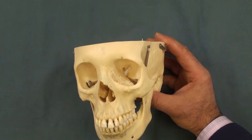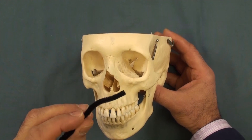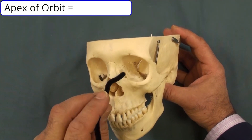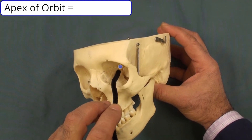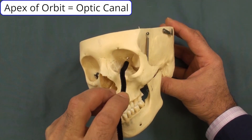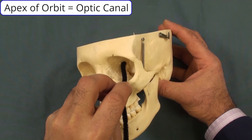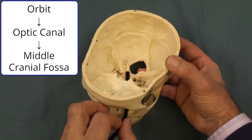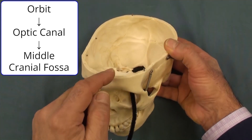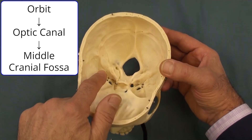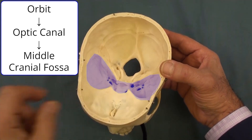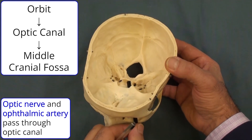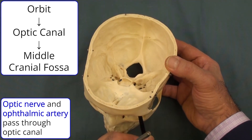Let's begin with the bony landmarks inside the orbit. The apex of the orbital cavity is where we find the optic canal. Passing a pipe cleaner through the optic canal, you can see it connects the orbit to the middle cranial fossa. The optic nerve passes through the optic canal.